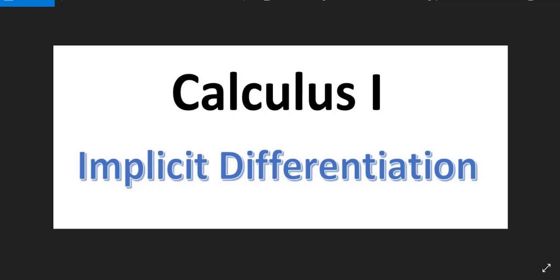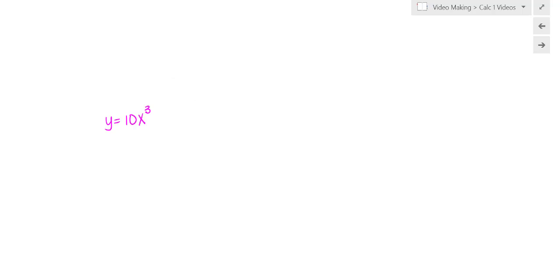Hi, and welcome to a Calculus 1 video on implicit differentiation. Before we get to the implicit differentiation examples, let's take a look at something we've seen before. If you were given the equation y equals 10x cubed and asked to find its derivative, we might say y prime equals 30x squared.